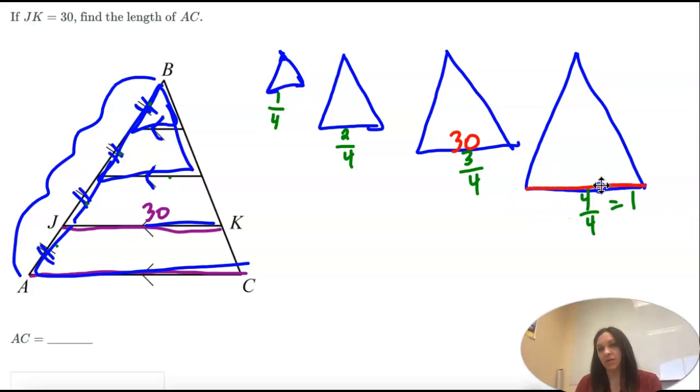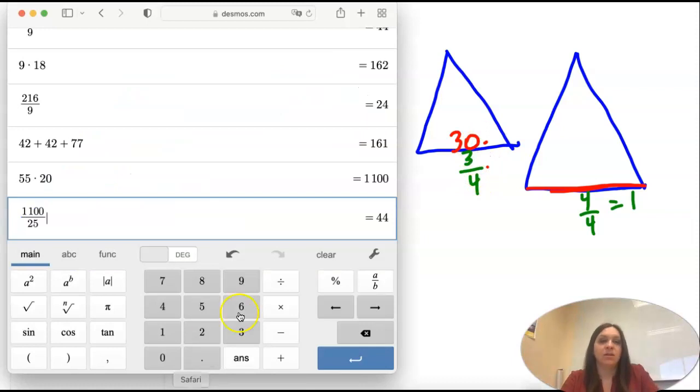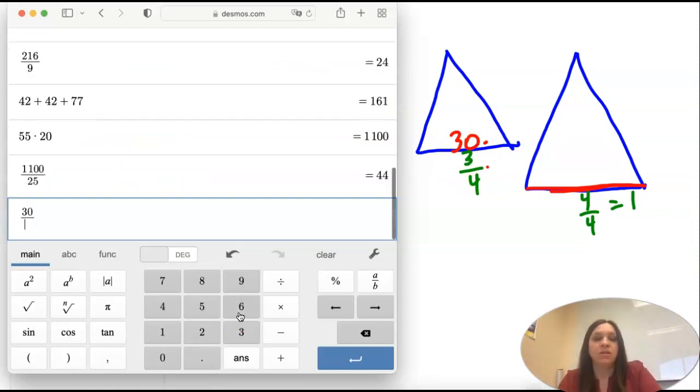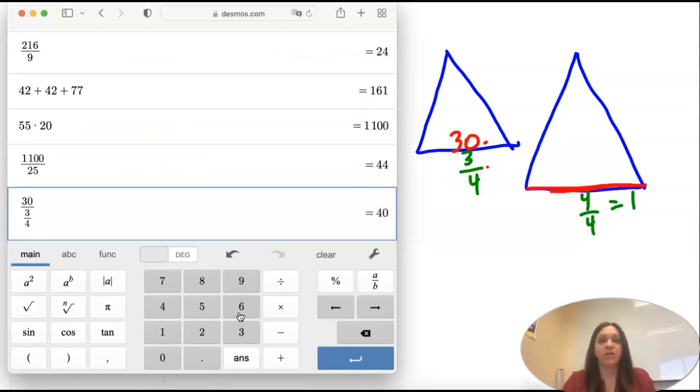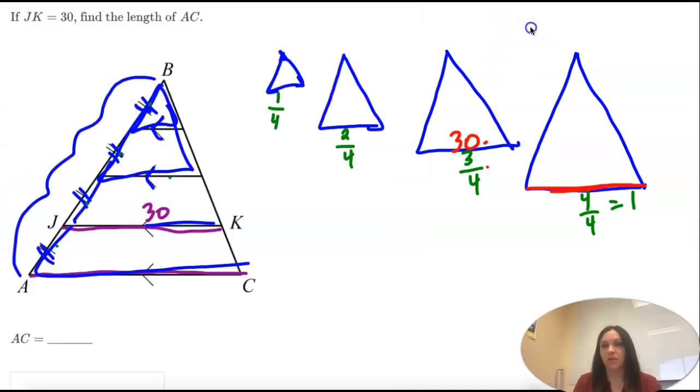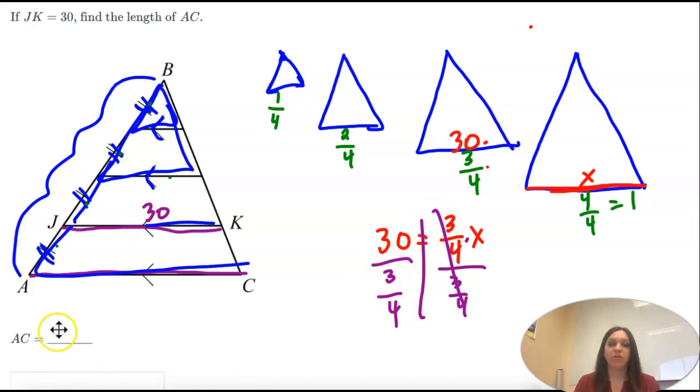So if I want to find. If I know this is 30. And this I don't know. I would take 30. Divided by three fourths. Let me show you why. So 30 equals three fourths of this side. So in order to solve for x. I would divide by three fourths. And 30 divided by three fourths is 40. I would type in 40.